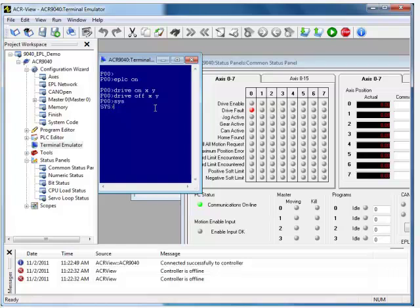From the SYS prompt, if I try to do a DRIVE ON X Y, it'll say unknown command because it doesn't recognize X or Y. But if I do a DRIVE ON axis zero space axis one, both will enable. Same thing with DRIVE OFF. And then I can go back into PROG zero, and back up to the P00 prompt.